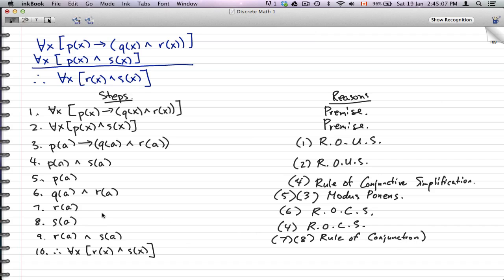So what we ended up with is we have r(a) and s(a). We ended up with r(a) and s(a). Therefore, we can get for all x, r(x) and s(x) by doing nine and the rule of universal generalization.